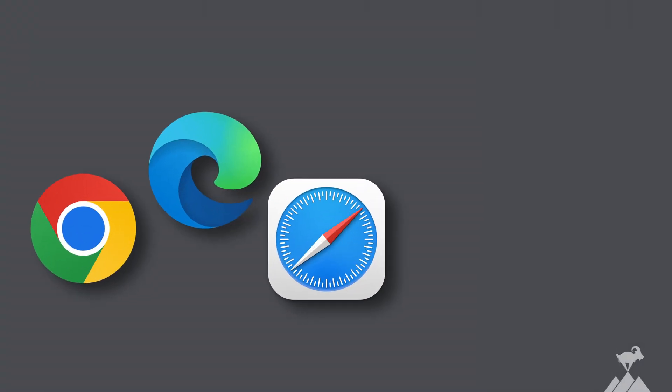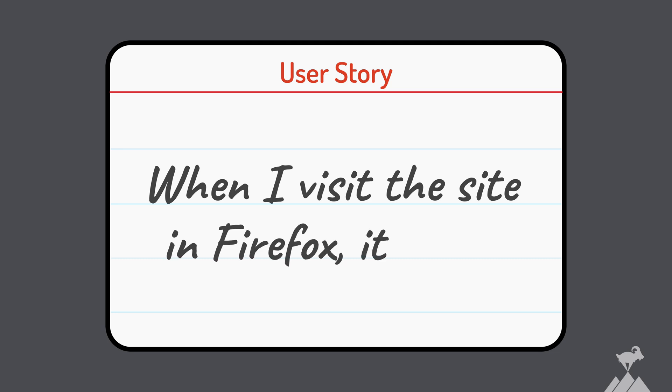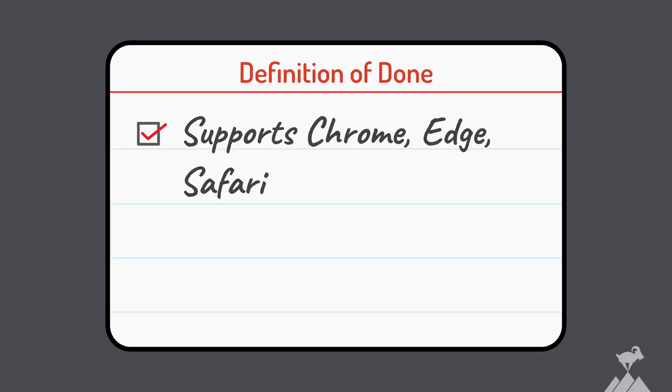Let's say you support Chrome, Edge, and Safari, and eventually you want to add Firefox. To ensure you don't forget to do that, write a story: 'When I visit the site in Firefox, it works.' When that story bubbles up in priority, do the work to implement it. Then update your definition of done to say: supports Chrome, Edge, Safari, and Firefox.